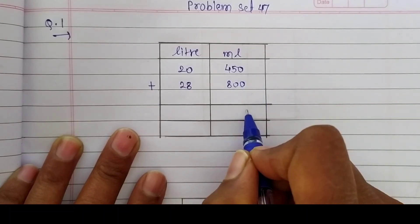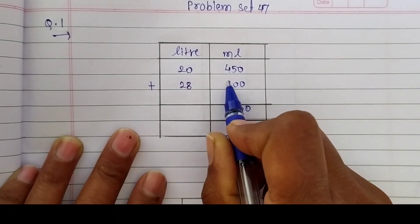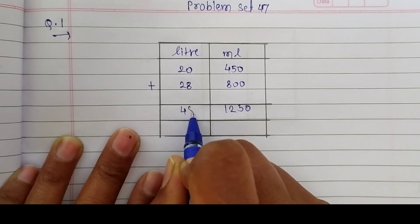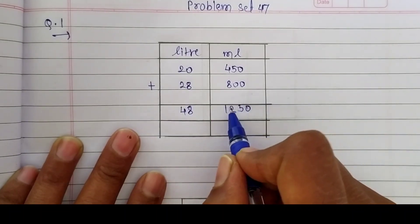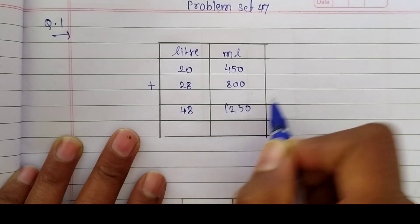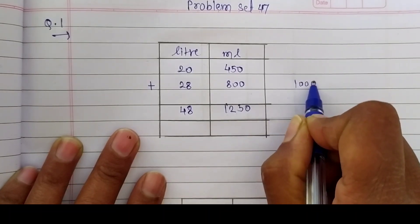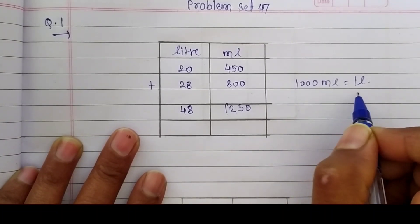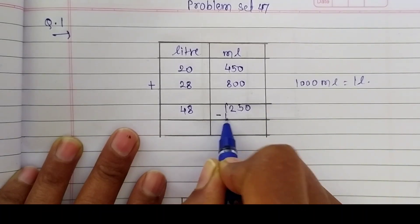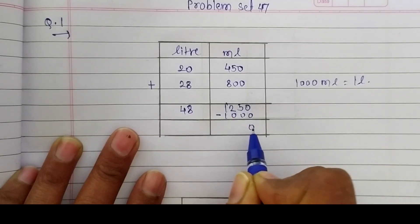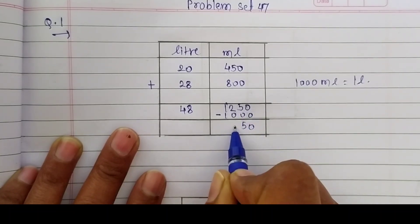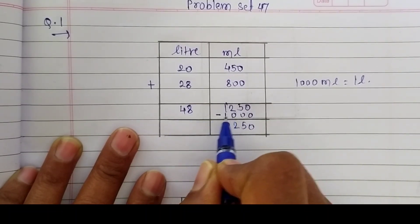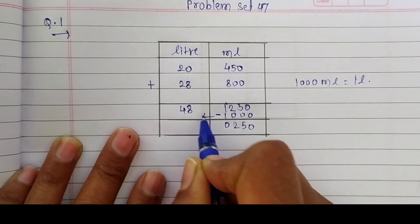This is an addition question. We have 20 liters 450 milliliters plus 28 liters 800 milliliters. Adding: in the milliliter column, 450 plus 800 equals 1250 milliliters. In the liter column, 20 plus 28 equals 48. Now, since 1000 milliliters equals 1 liter, we subtract 1000 from 1250 to get 250 milliliters, and carry 1 liter over to the liter column.